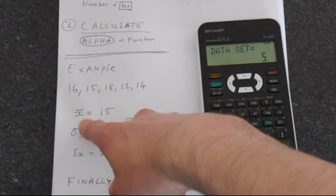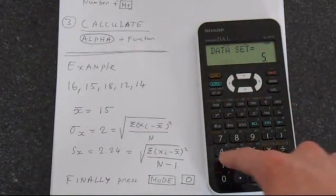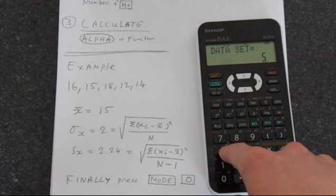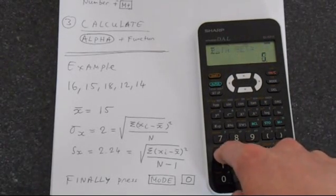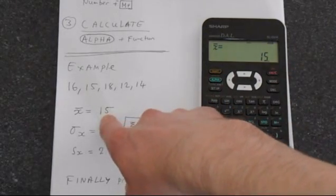So let's start by calculating the mean. Press alpha, and then you'll notice that this x bar which means mean is above the number 4. Press equals and that calculates the mean which is 15.